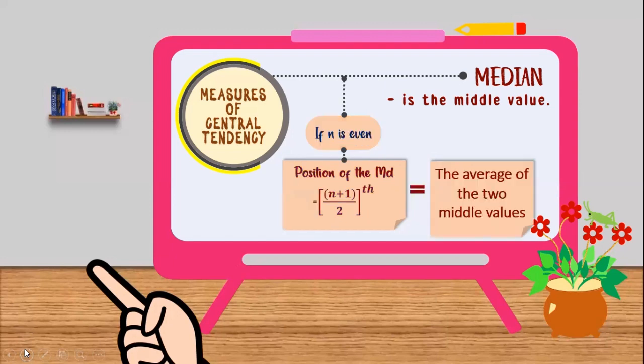If n is even, we also need to use the position of the median is equal to the quantity of n plus 1 over 2. But we need to equate it to the average of the two middle values. To understand better, let's go to the example.